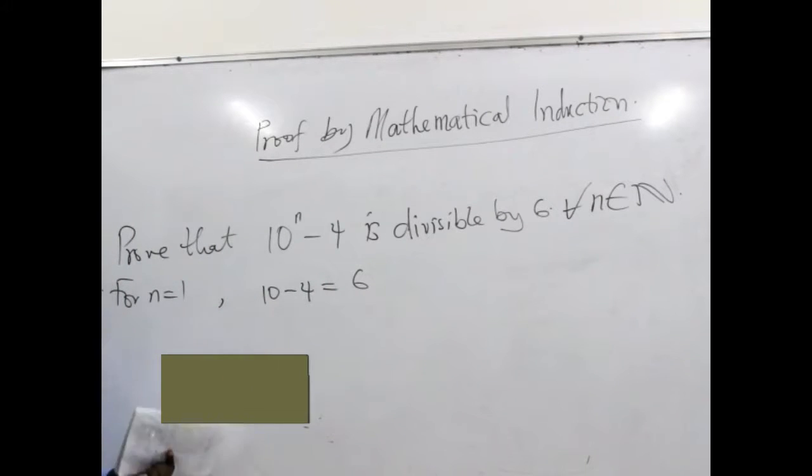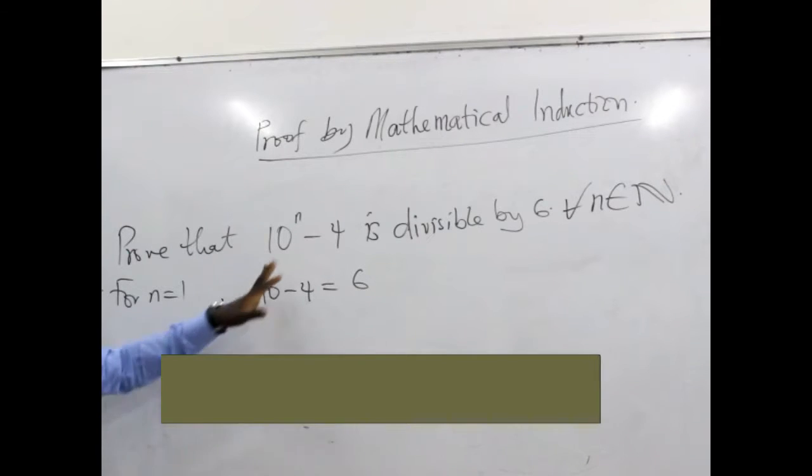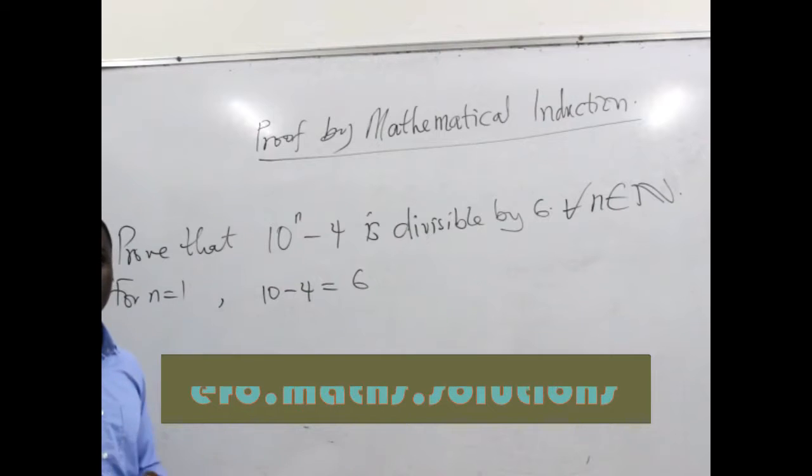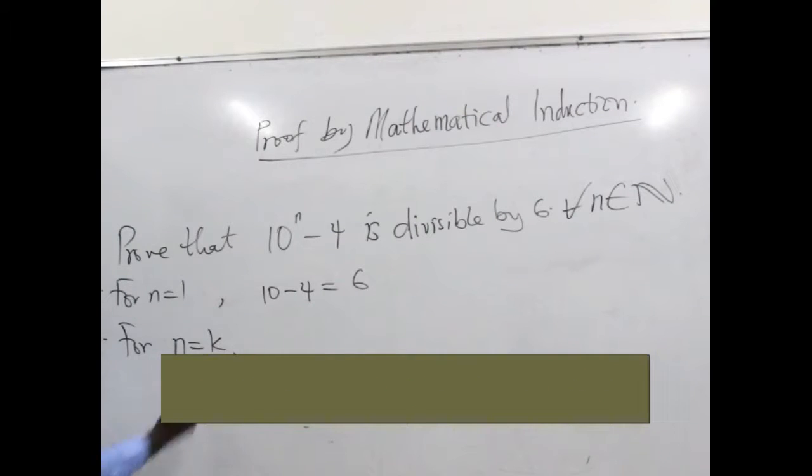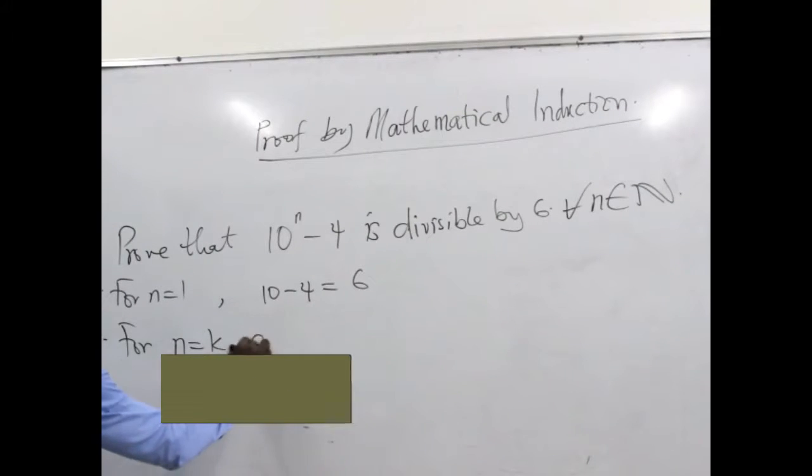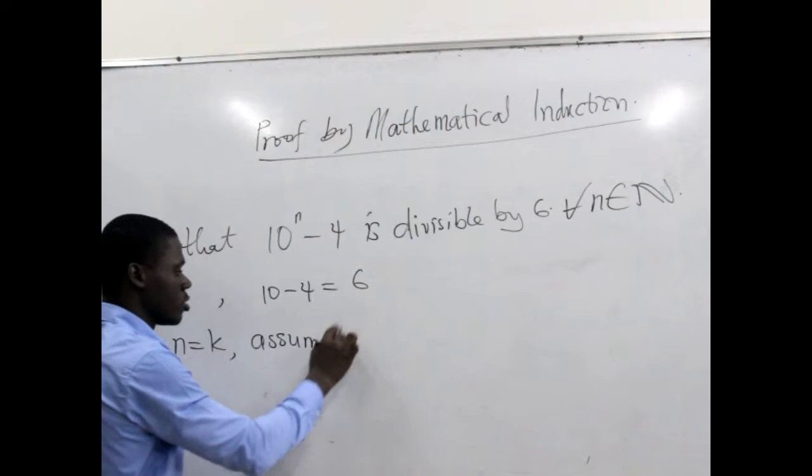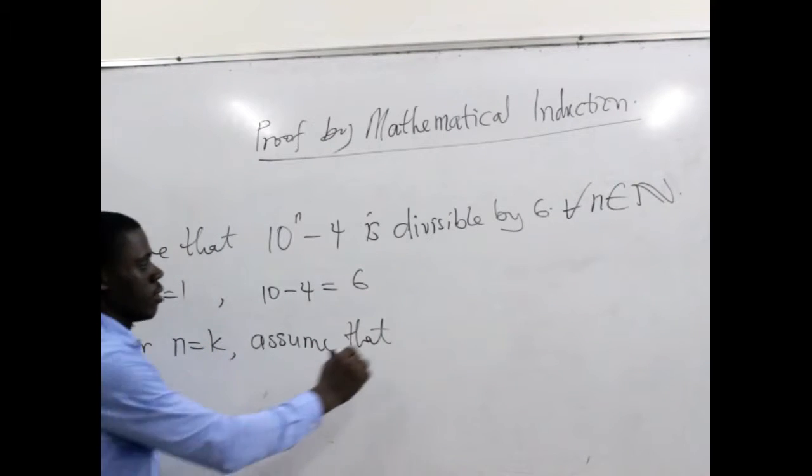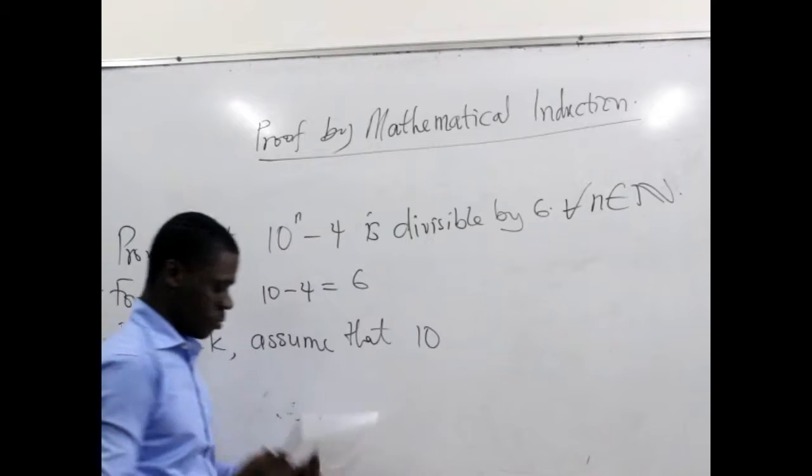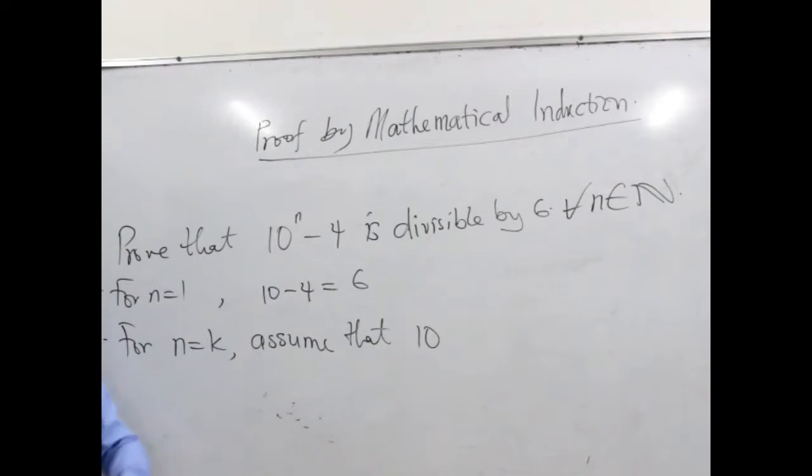So moving forward, we assume that this particular statement is true for n equals k. So for n equals k we are assuming that any place we see n in the original expression we are going to replace with k.